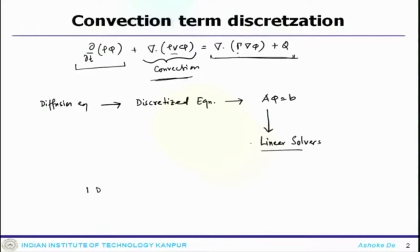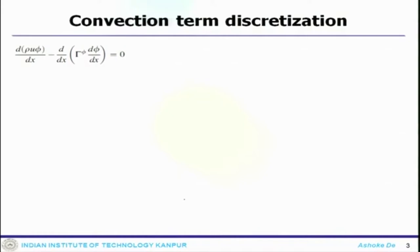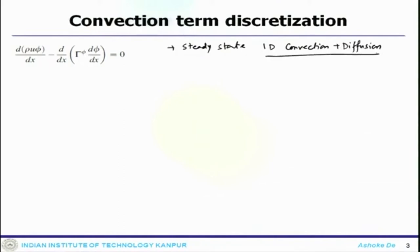We will look at the 1D system first and discuss concepts like how to discretize the convection term. Once we are done with the 1D system, we will move to multi-dimensional cases like 2D or 3D. We will also discuss orthogonal and non-orthogonal systems and the corrections required due to non-orthogonality. To begin, we start with the steady-state 1D convection-diffusion system without a source term.